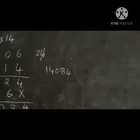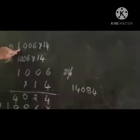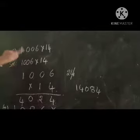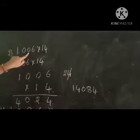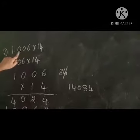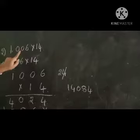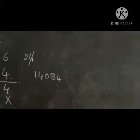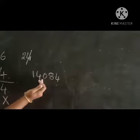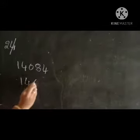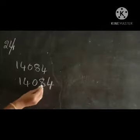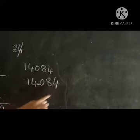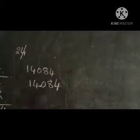Where do we keep the decimal point in 14084? Go back to the question 1.006 into 14 — after the decimal point there are 3 numbers. So in the product, before 3 numbers we keep the decimal point: 1, 2, 3. Here we keep the decimal point. So the answer is 14.084.